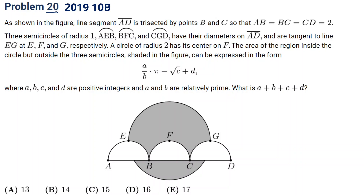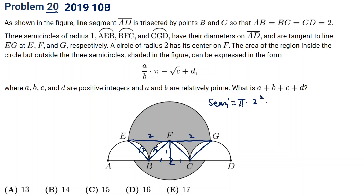The shaded region seems complex, but we can cut it into parts. First, the semicircle: since AB and BC equal two, and using diagonals of one, one, one giving root two and root two making two, the semicircle area is pi times two squared times one-half, which is 2 pi.